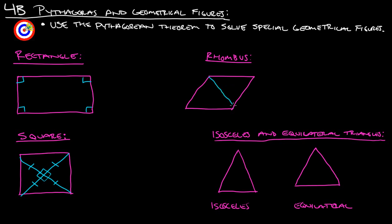Rhombus also — when you draw diagonals, the diagonals on a rhombus also bisect each other. So this length is the same as that length, and then this length here is the same as that length there, and also just like the square, all these angles in here are right angles.